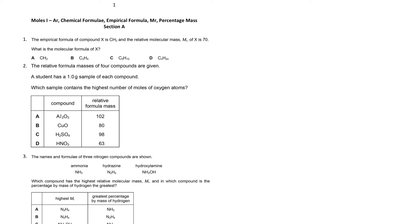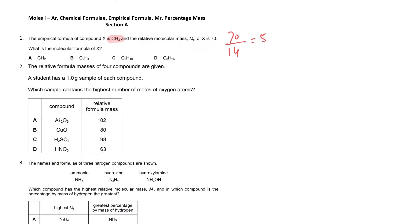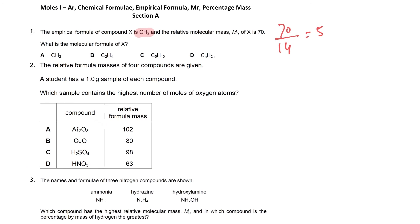The empirical formula for a compound is CH2 and the relative molecular mass is 70. We divide the Mr by the empirical mass: 70 divided by 14 gives us a ratio of 5. We multiply the empirical formula by 5 to get the molecular formula: C5H10.